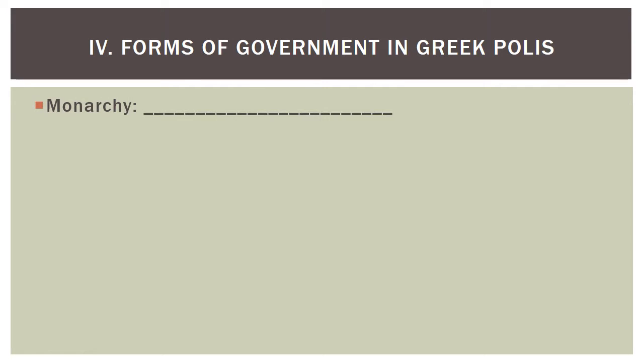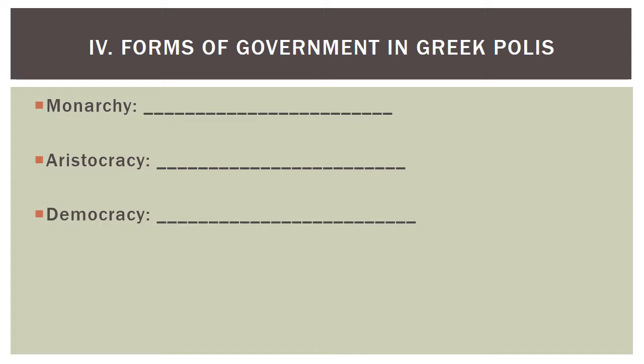There were various forms of government in Greek city-states. The first kind was a monarchy, where a single ruler governed. Others were aristocracies, where upper-class nobility ruled together and made decisions — this was the kind of government Sparta had. Then there was Athens, which was a democracy, meaning it was ruled by the people, who voted and made their own decisions.